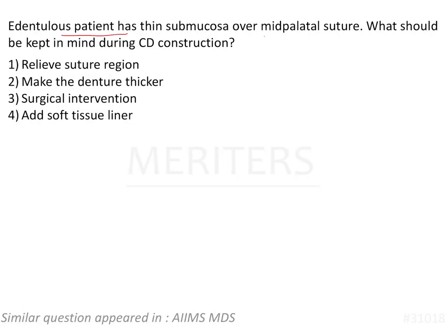An edentulous patient has thin submucosa over the mid palatal suture. What should be kept in mind during complete denture construction? The options are: relieve the suture region, make the denture thicker, surgical intervention, and add soft tissue liner.